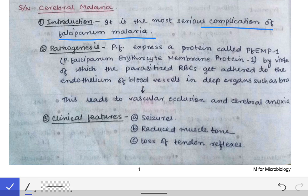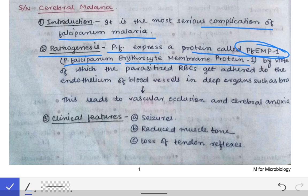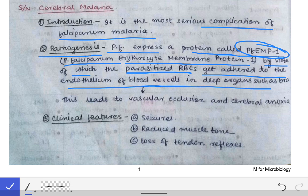The pathogenesis involves adherence to the deeper capillaries. Plasmodium falciparum expresses a protein called PfEMP1, that is Plasmodium falciparum Erythrocyte Membrane Protein 1. By virtue of this protein, the parasitized RBCs get adhered to the endothelium of the blood vessels in deeper organs such as the brain. This leads to occlusion of the blood vessels, and hence oxygenated blood cannot reach the cerebral cortex, leading to cerebral anoxia.